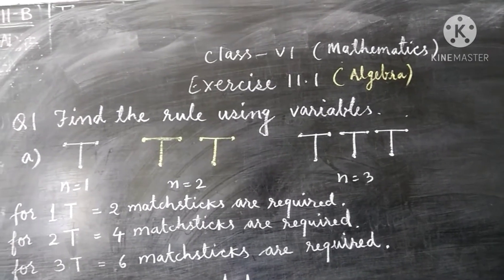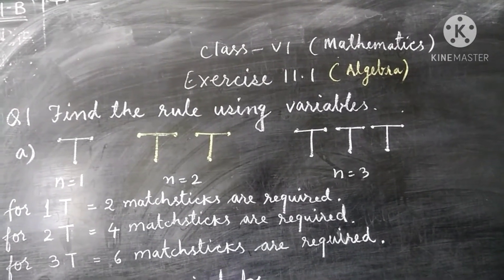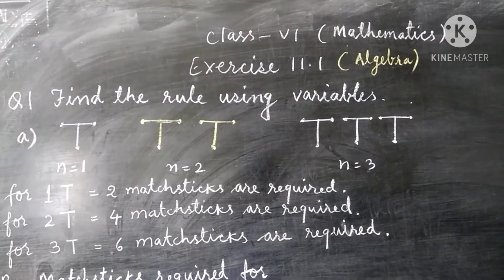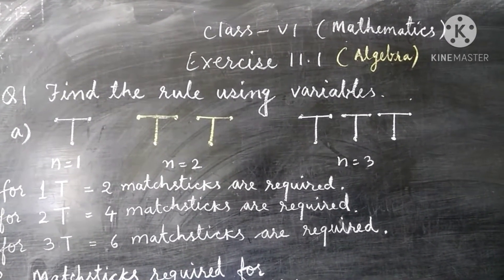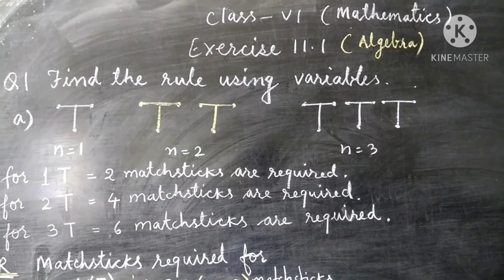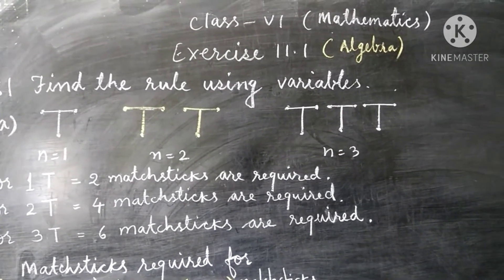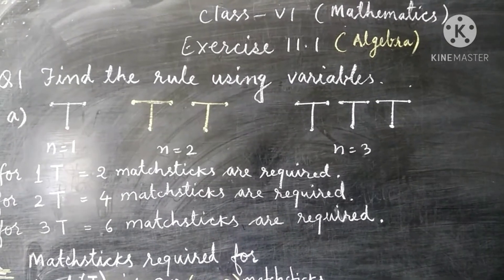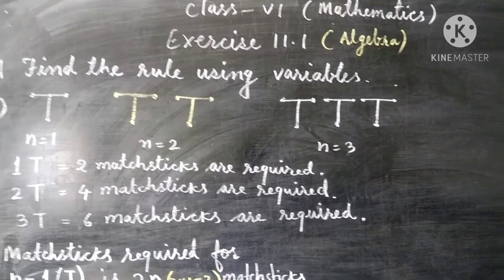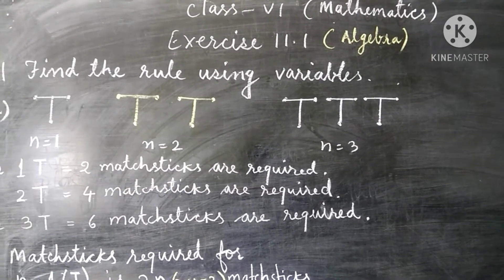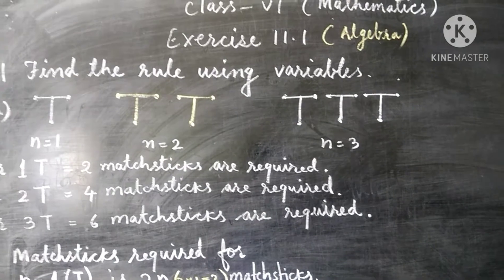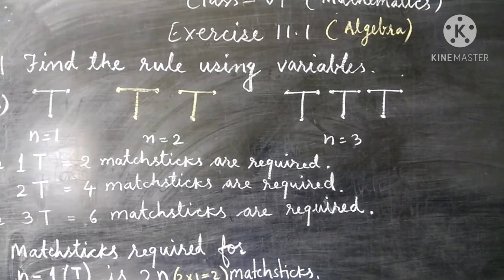Question number 1: find the rule using variables. The first part of the question involves the letter T. To make one T, two matchsticks are used. To make two T's, four matchsticks are used. To make three T's, six matchsticks are used. How many matchsticks will be needed to make four T's?